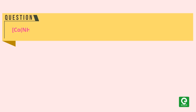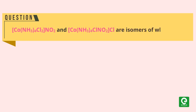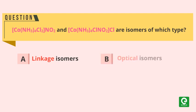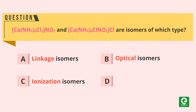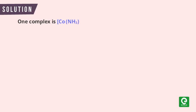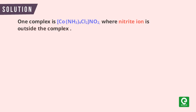Question: [Co(NH₃)₄Cl₂]NO₂ and [Co(NH₃)₄Cl(NO₂)]Cl are isomers of which type? Options: (a) linkage isomers, (b) optical isomers, (c) ionization isomers, and (d) geometrical isomers. Solution: in this question, one complex is [Co(NH₃)₄Cl₂]NO₂ where nitrite ion is outside the complex.